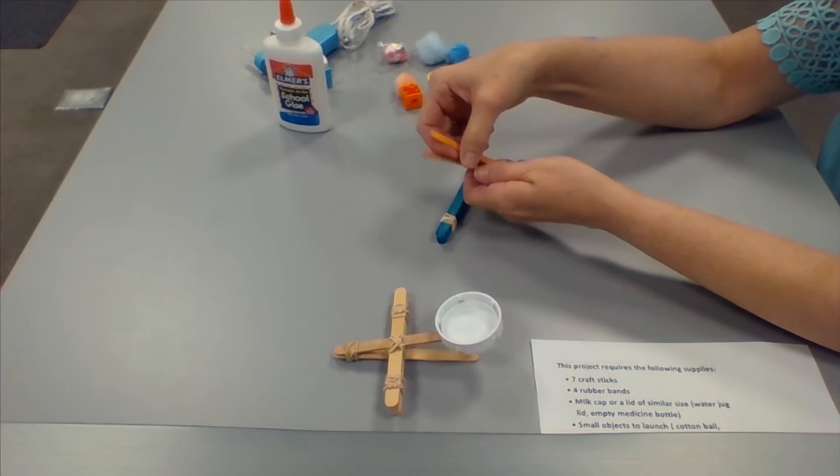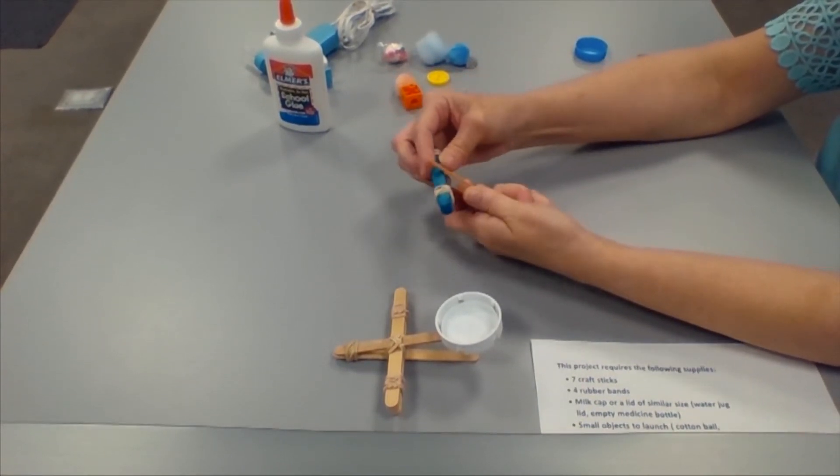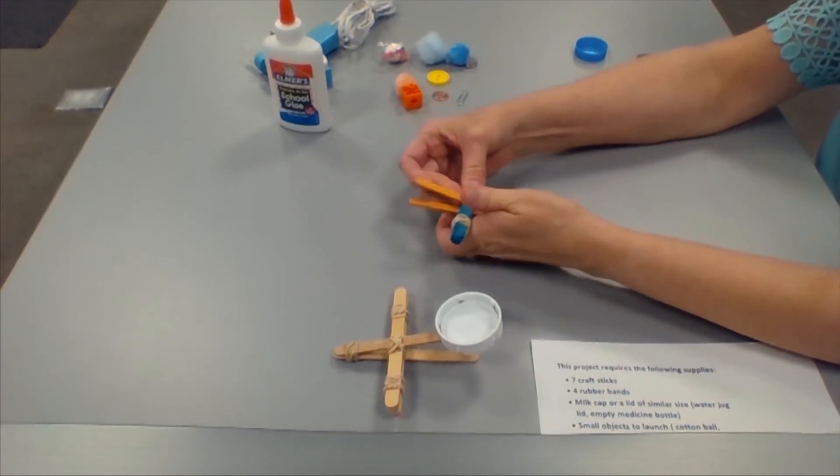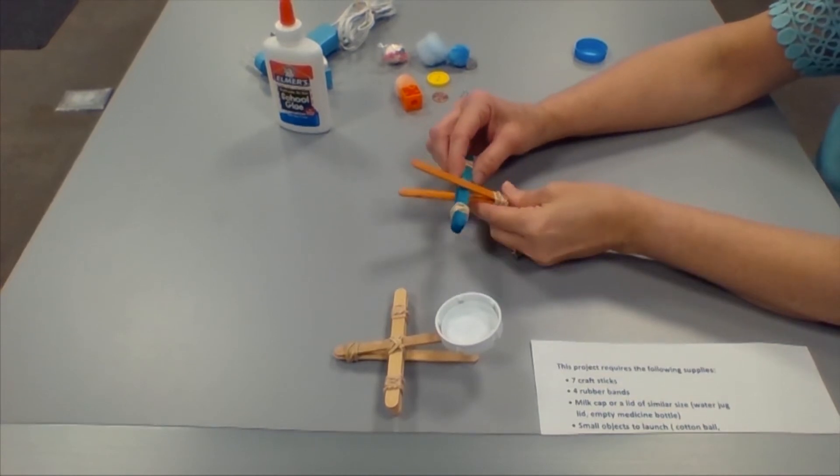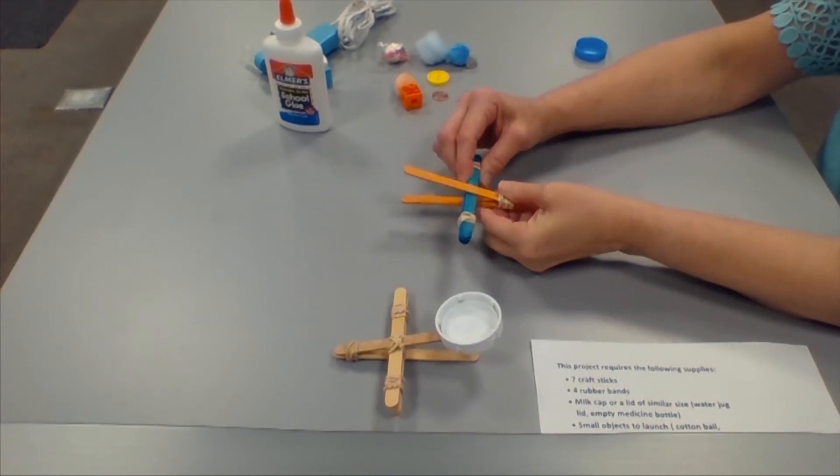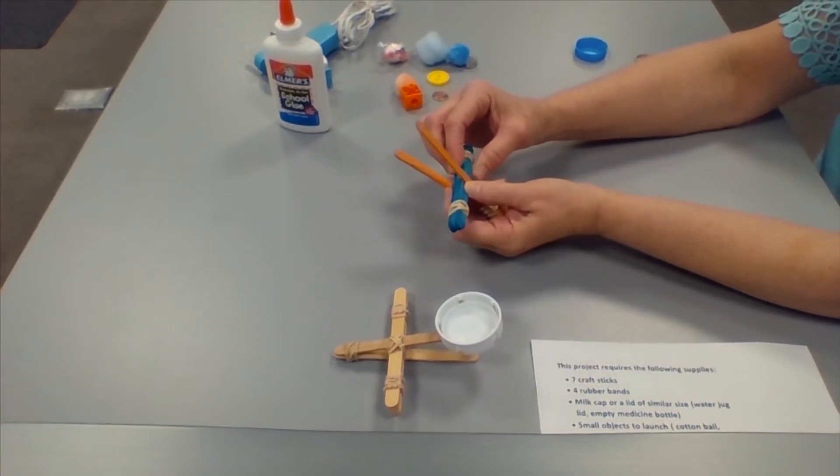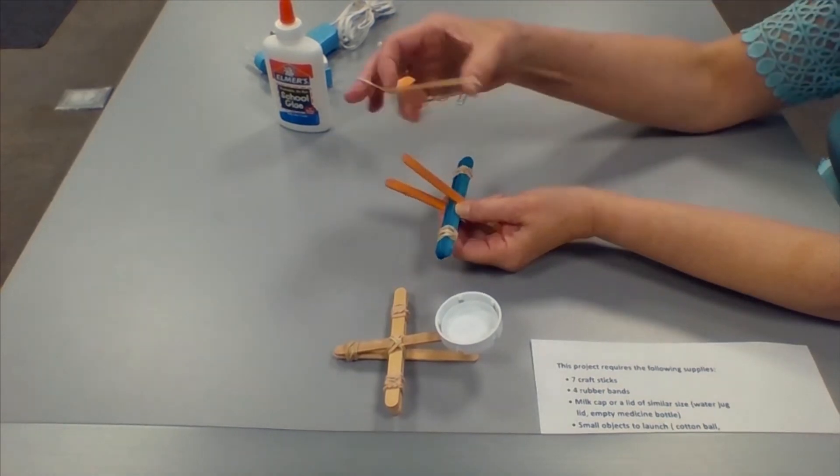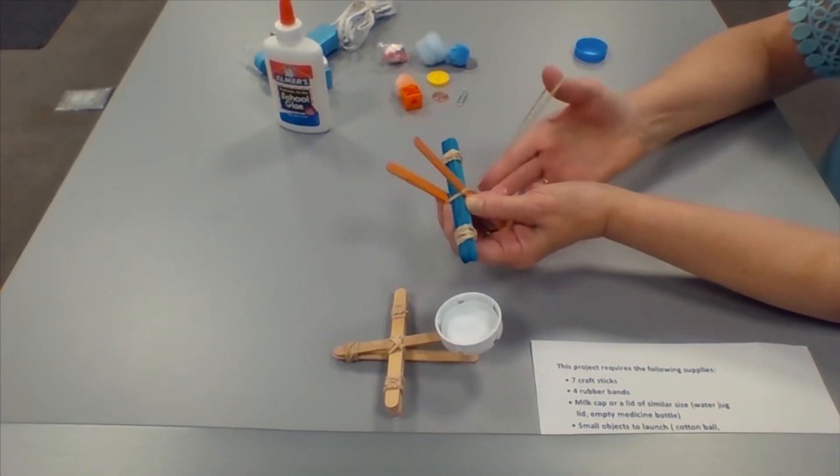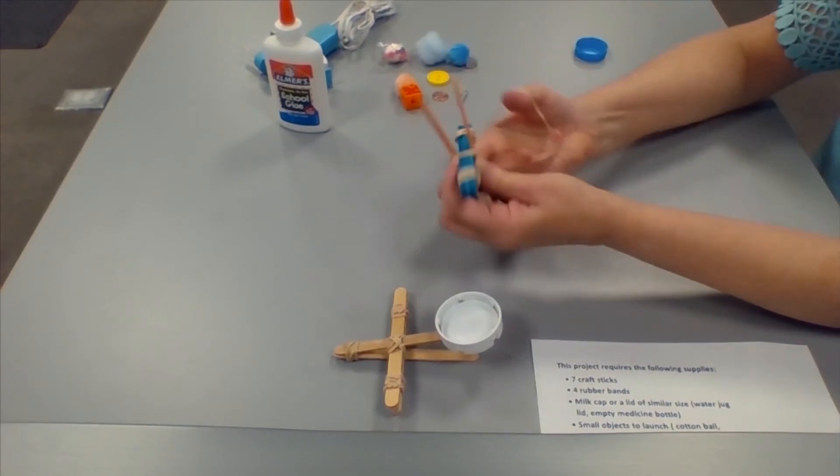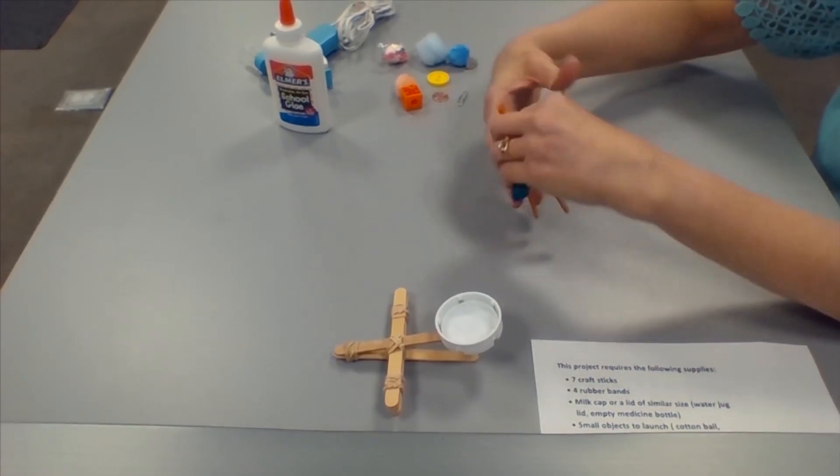Baking soda and vinegar react chemically because one is a base and the other is an acid. Baking soda is a basic compound called sodium bicarbonate. Vinegar is a diluted solution that contains acetic acid. The baking soda and vinegar reaction is actually two separate reactions.